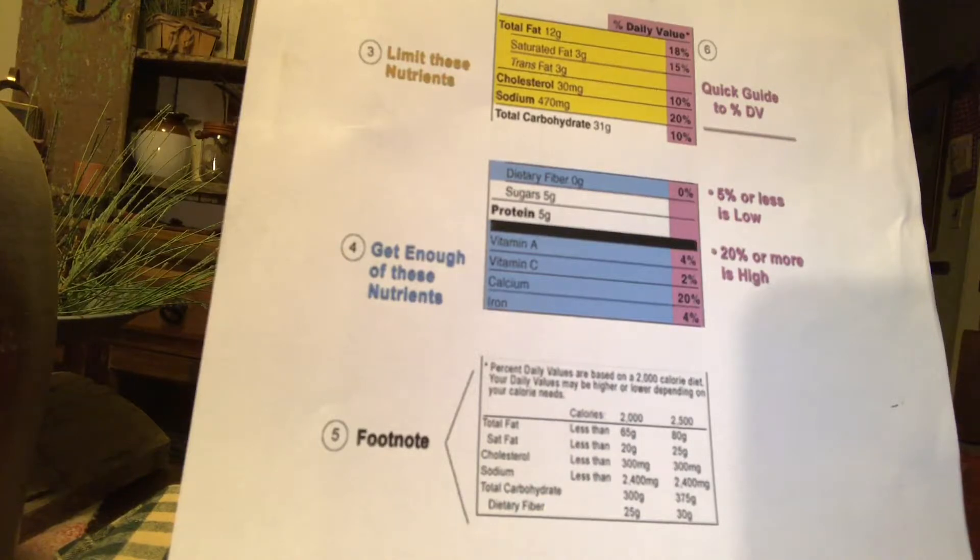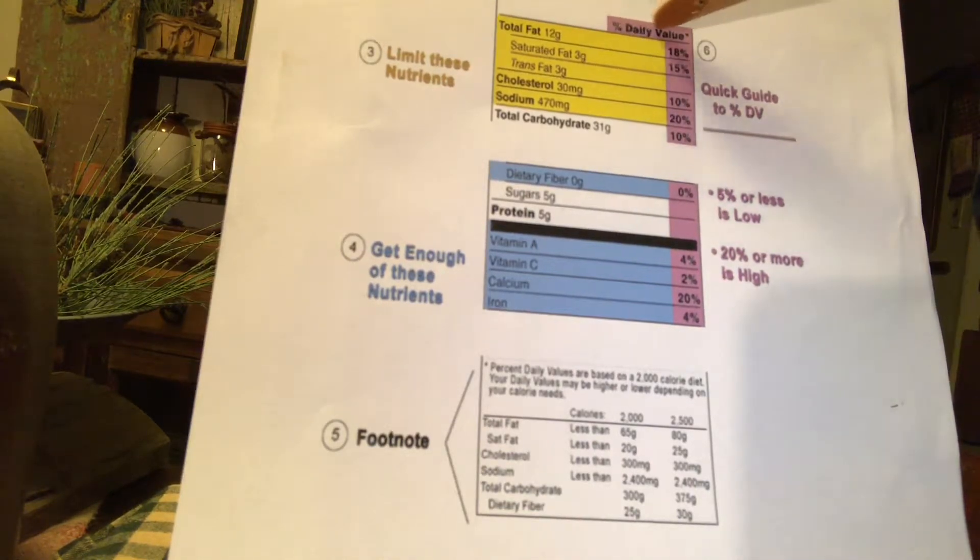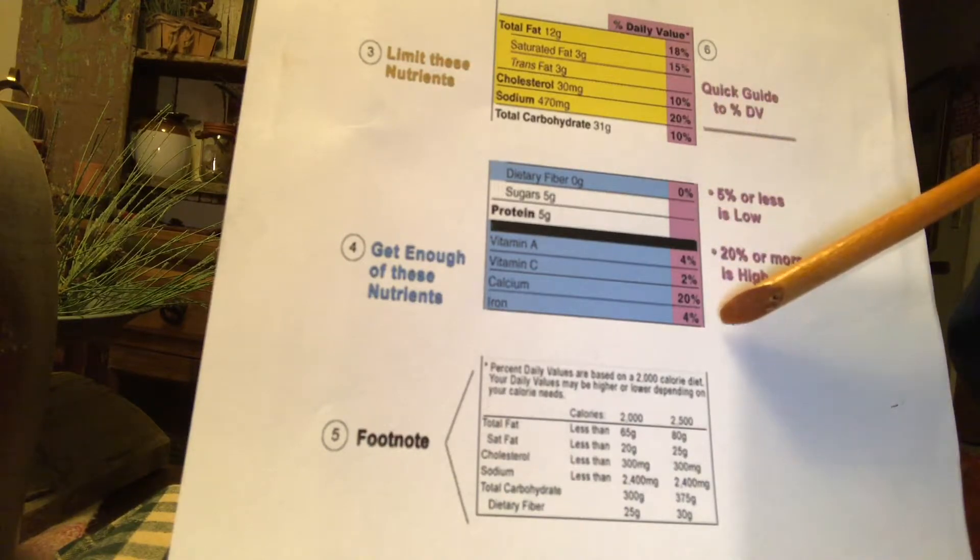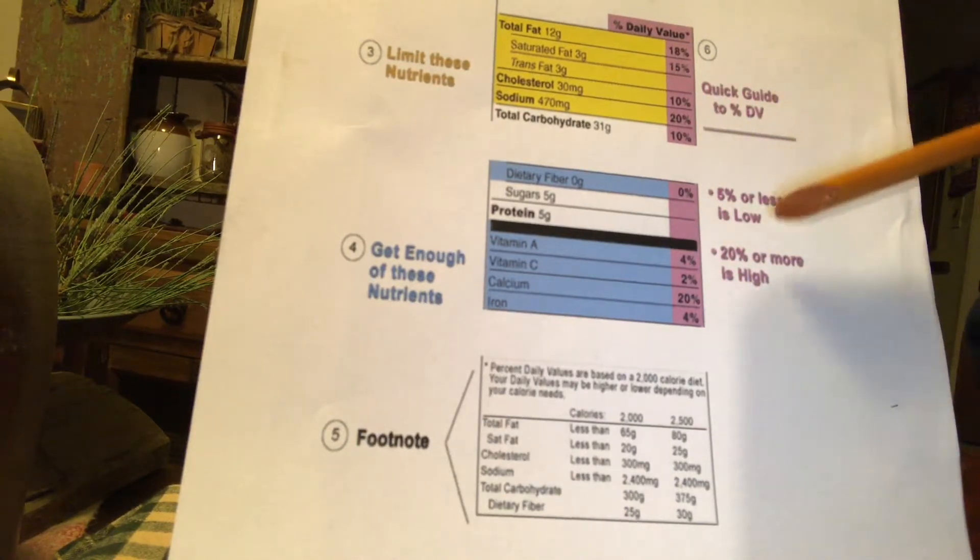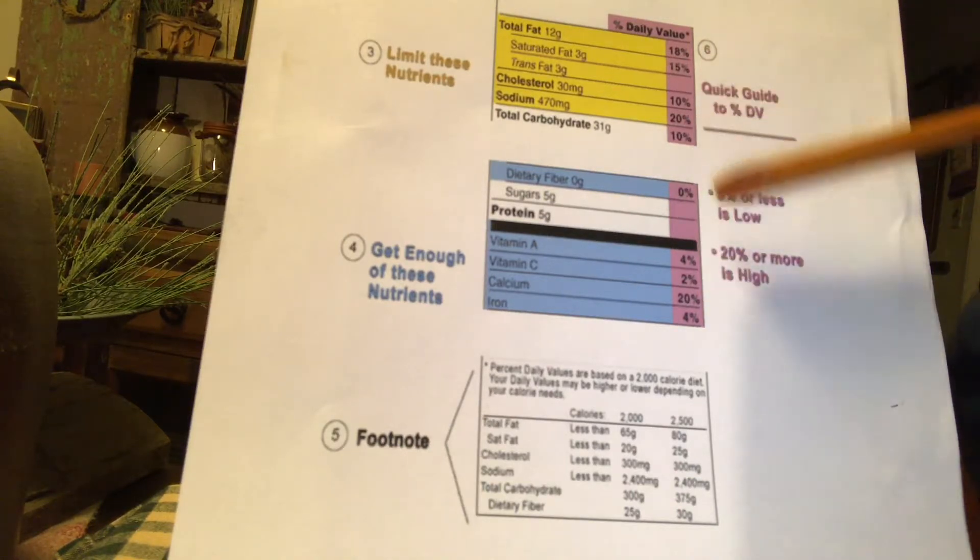So, if we want to, if we want to use fat, for example, the total fat, according to the percentage of daily value, that's what this right-hand column represents. The FDA has given us a guideline to use when you're looking at these numbers.